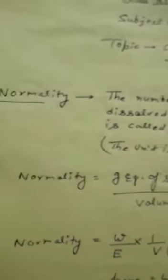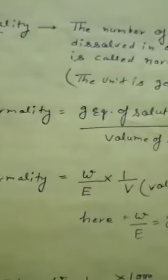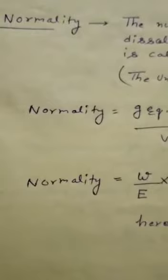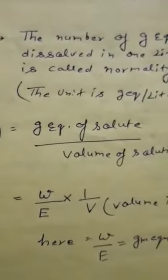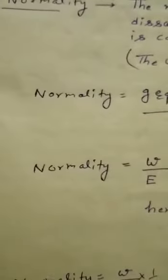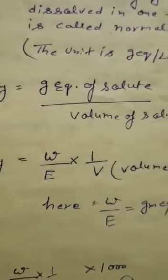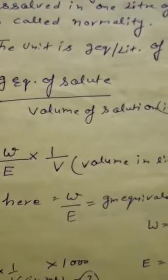Normality may be defined as the number of gram equivalents of solute dissolved in 1 litre of solution. The unit is gram equivalent per litre, expressed by capital N. We can calculate normality by the following formulas. The first formula: normality is equal to gram equivalents of solute divided by volume of solution.